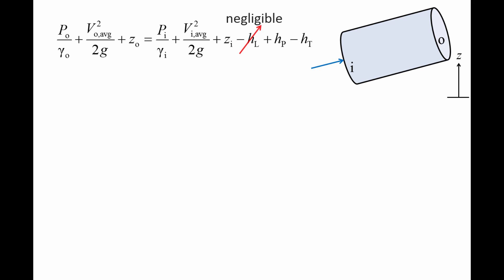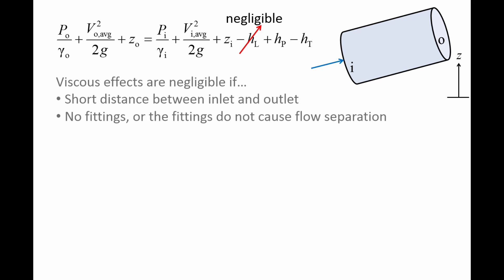If we have a situation in which the viscous effects are small, the head loss term would be negligible. This would occur if the distance between the inlet and outlet is short and there are no fittings, or the fittings do not disturb the flow sufficiently to cause flow separation. Flow separation is a condition in which the flow detaches from the wall and eddies are formed, resulting in relatively large losses of mechanical energy.